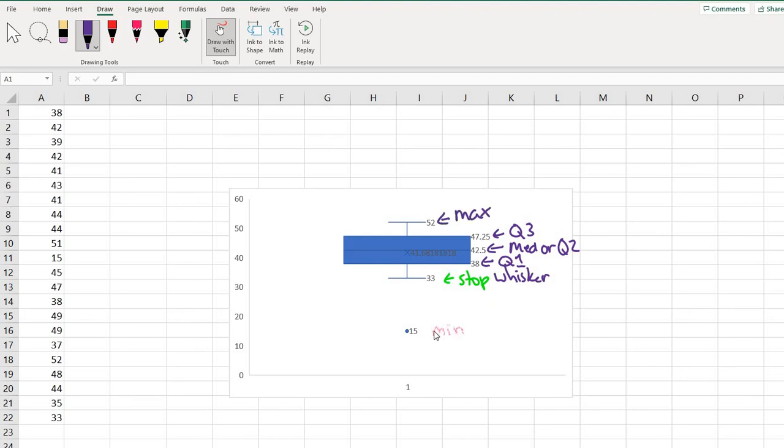So if you need the five number summary, the five number summary is the minimum, Q1, the median, Q3, and your maximum value.